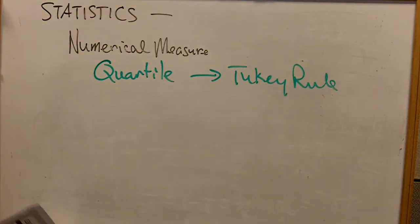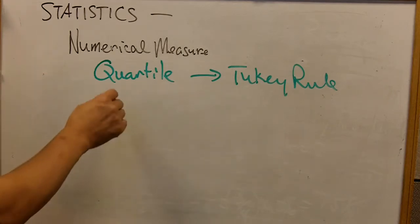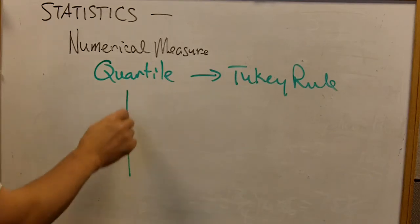This is a tool to help us determine if there are any outliers embedded in a data set. So quartiles - I want you to think about quarters in a dollar. There are four quarters in a dollar, and similarly, there would be four quartiles.